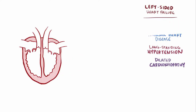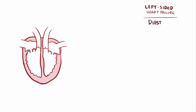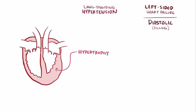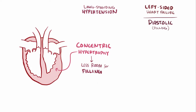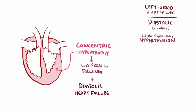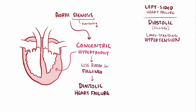Even though systolic failure is most common in left-sided heart failure, diastolic heart failure or filling dysfunction can also happen. In hypertension, the left ventricle hypertrophies concentrically, which means new sarcomeres are generated in parallel with existing ones. As the heart muscle wall enlarges, it crowds into the ventricular chamber space, resulting in less room for blood — so hypertension can cause diastolic heart failure in addition to systolic dysfunction. Concentric hypertrophy leading to diastolic failure can also be caused by aortic stenosis, a narrowing of the aortic valve opening, as well as by hypertrophic cardiomyopathy, an abnormal ventricular wall thickening often from a genetic cause.